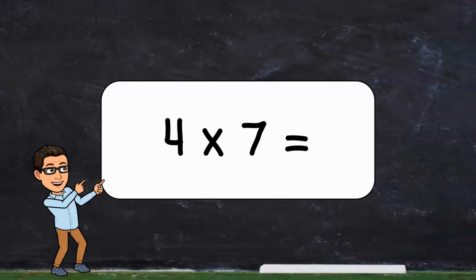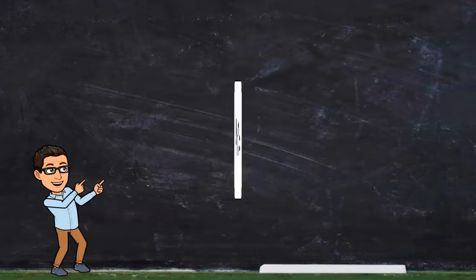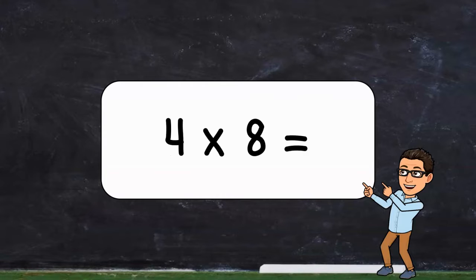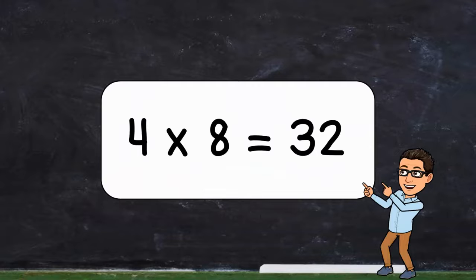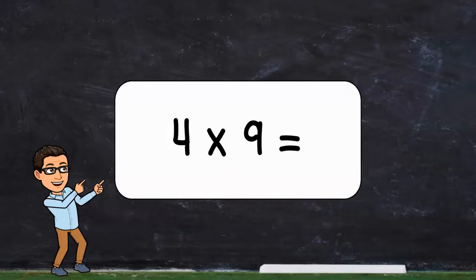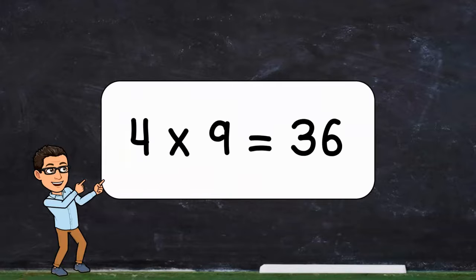Four times seven. Four times seven equals twenty-eight. Four times eight. Four times eight equals thirty-two. Four times nine. Four times nine equals thirty-six.